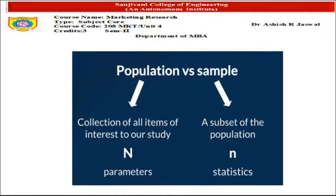Population is nothing but a collection of all items of interest to our study, from where we are going to collect the information. Population is generally denoted as capital N. More precisely, the numbers obtained from a population are termed as parameters. Sample is a subset of population, which is denoted by small n, and the number obtained is termed as statistics.